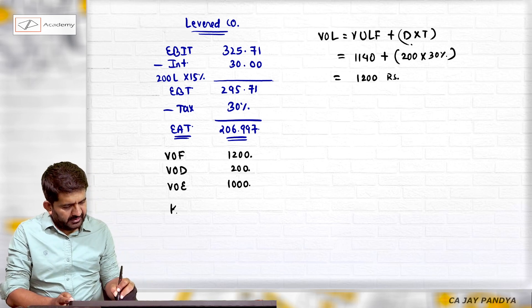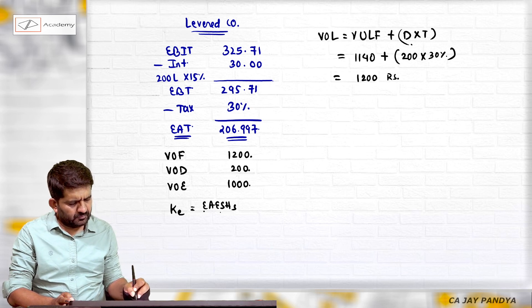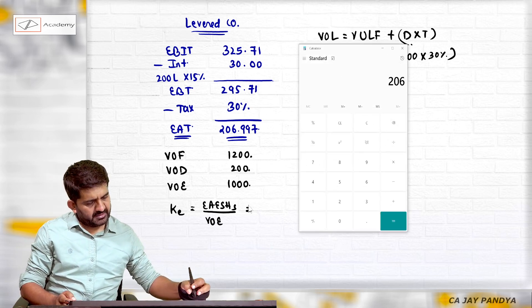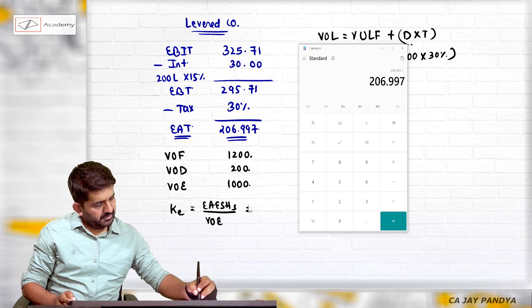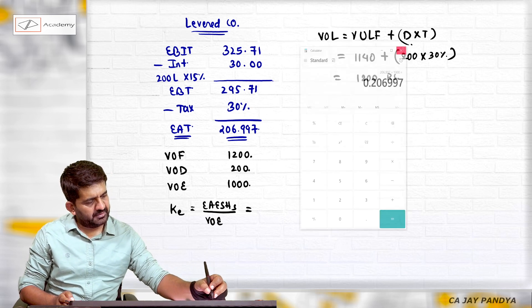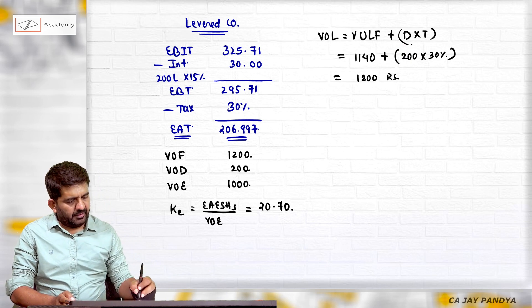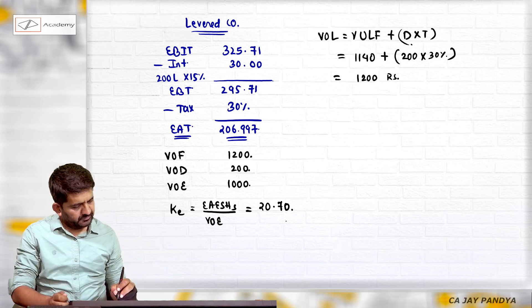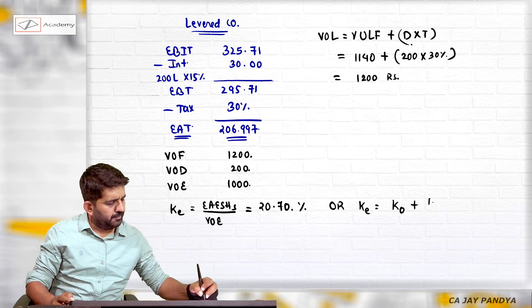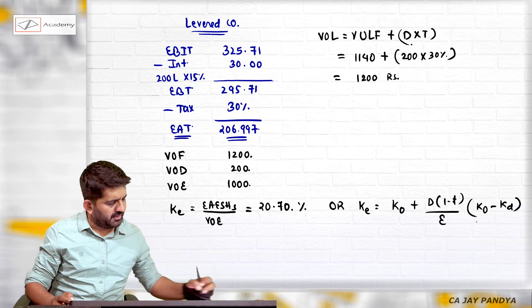I can easily find out ke by earnings available to equity shareholders divided by value of equity, which is 206.997 divided by 1000, which is 20.70 approximately. I can find out ke by which method? ke is equal to ko plus debt into 1 minus t upon equity, ko minus kd. Will give the same answer.